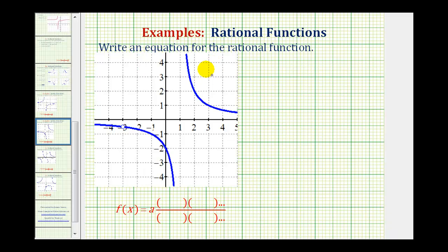We want to write an equation for the rational function based upon the given graph. To do this, we'll use the factored form of a rational function given here below, where a is a constant, and then we'll have factors in the numerator and in the denominator.